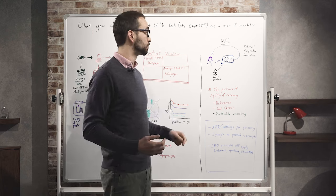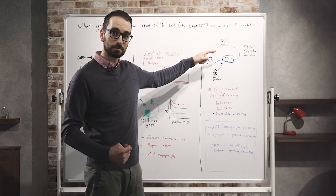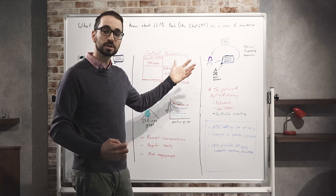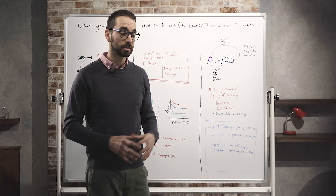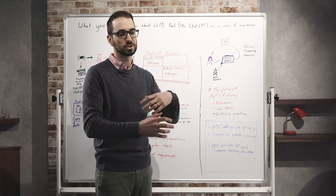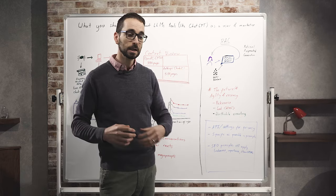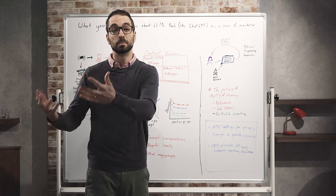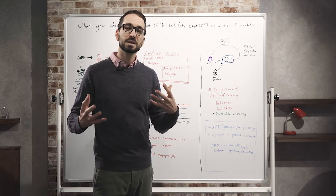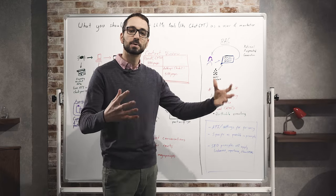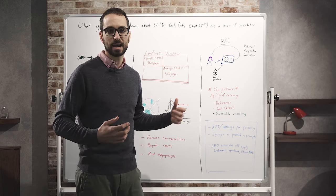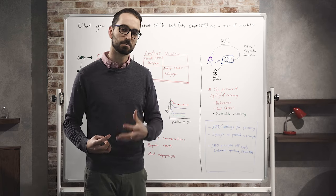One way they could solve that problem is by baking in RAG from the start. So essentially, when you're using this tool, they have three tiers of memory. They've got the long-term memory, the model, which is the way it's working at the moment, the short-term memory, the stuff that you're dumping into the text chat, and then a kind of a medium-term memory, which is information they've been able to gather, but they haven't had the time or the resource to bake it into the model yet.